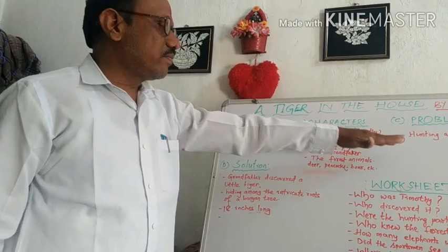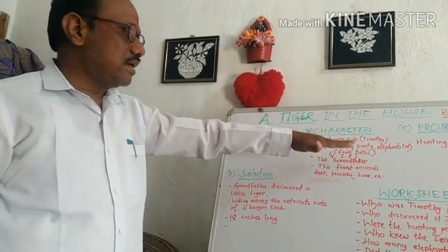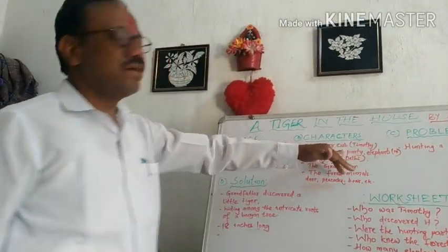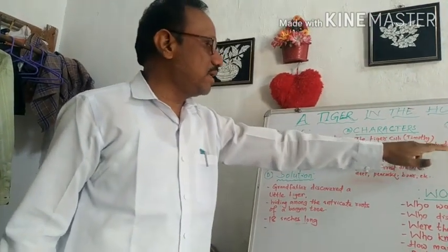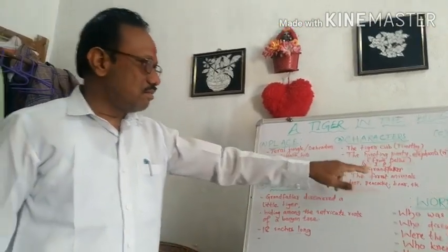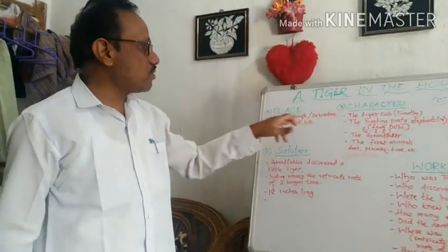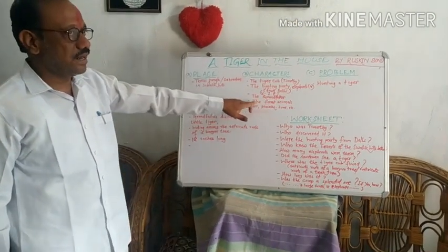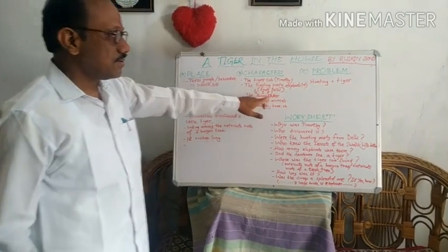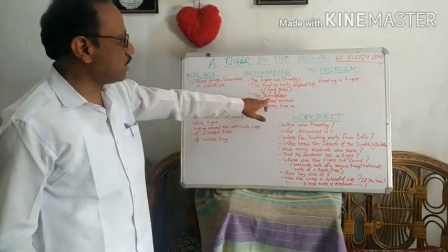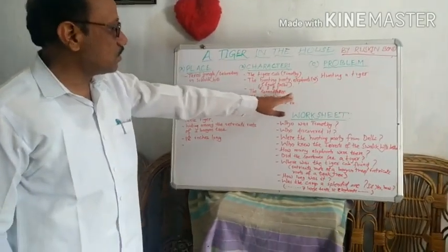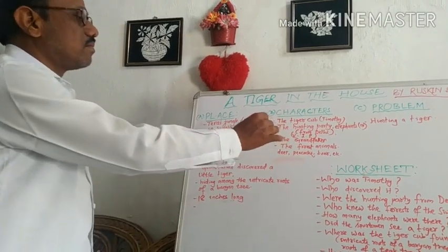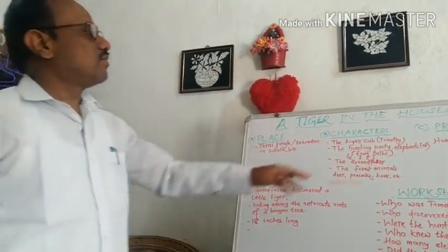They had a different dining hall and all such things. So from this we know the hunting party was from Delhi and they were very important persons. But they were not acquainted with the Terai jungle, so they included the grandfather. The grandfather was not a hunter, but he knew the Sivalik Hills better than all those men from Delhi.